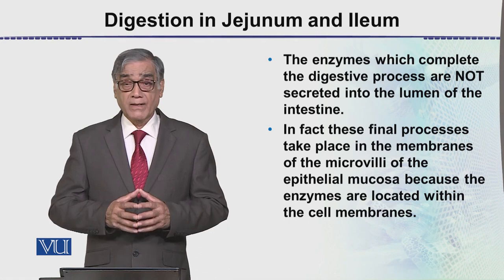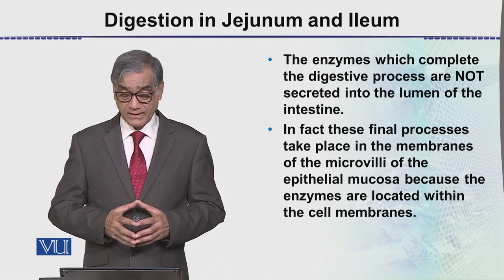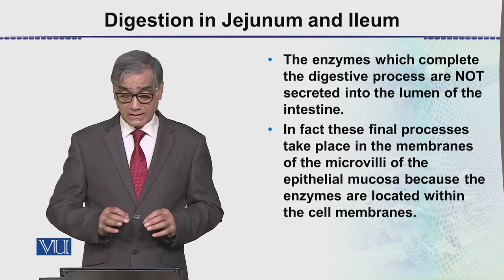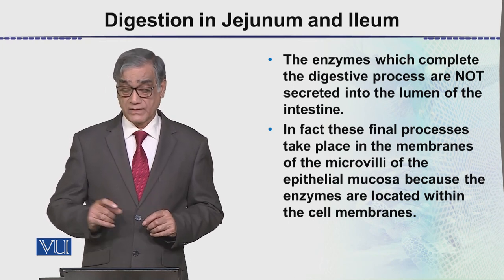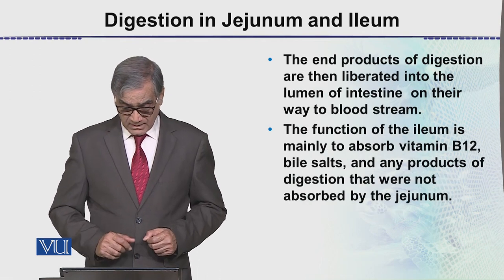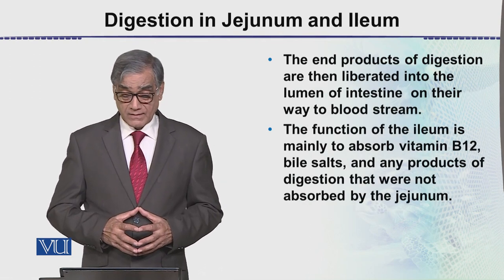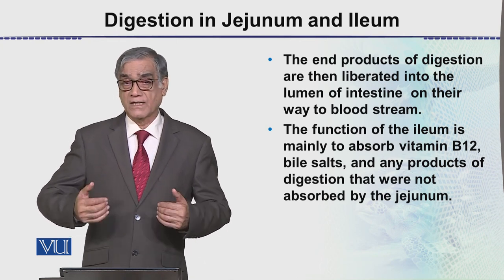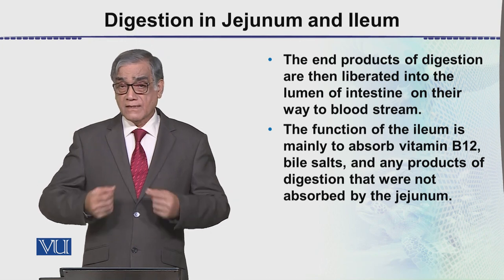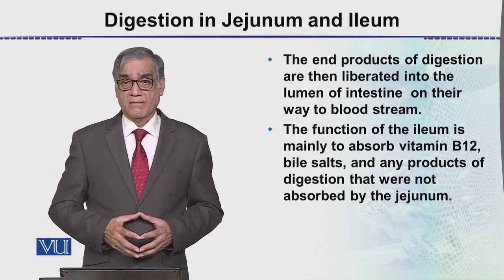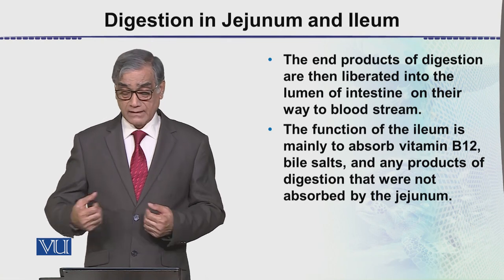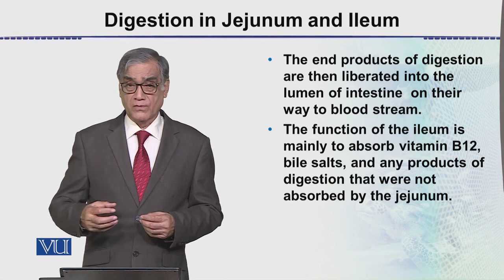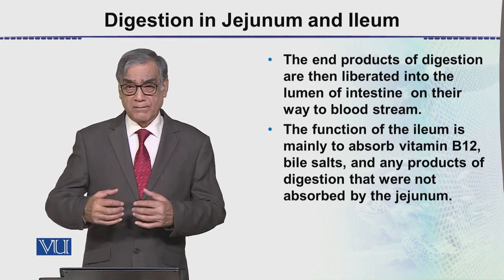These final processes take place in the membranes of the microvilli of the epithelial mucosa, because the enzymes are located within the cell membranes. The end products of digestion are then liberated into the lumen, where they move freely and are then absorbed.